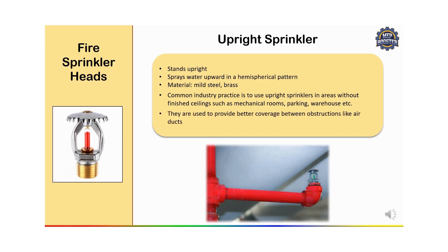Upright sprinklers are used to provide better coverage between obstructions like air ducts. Normally in open areas where a false ceiling is not present, such as mechanical rooms, parking, and warehouses, you can go for this type of sprinkler.